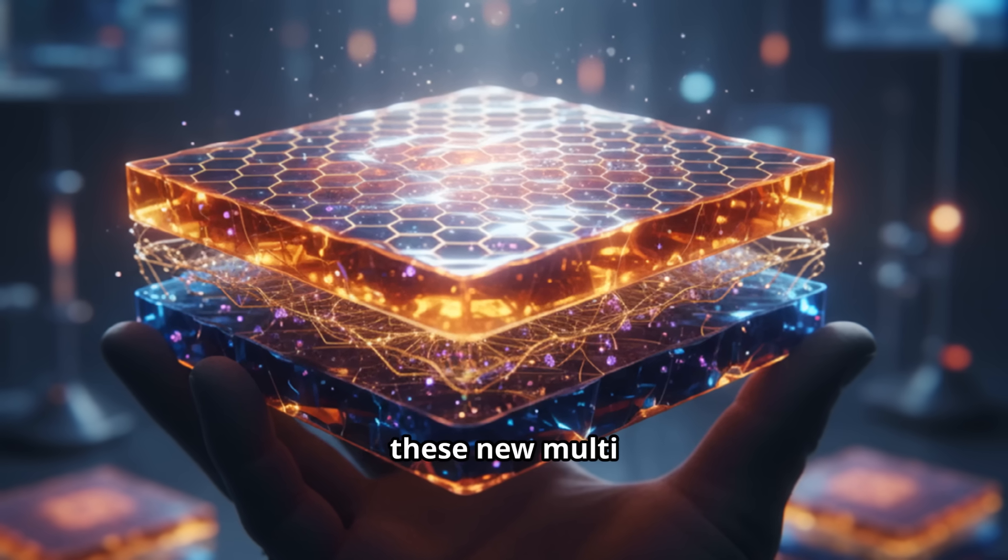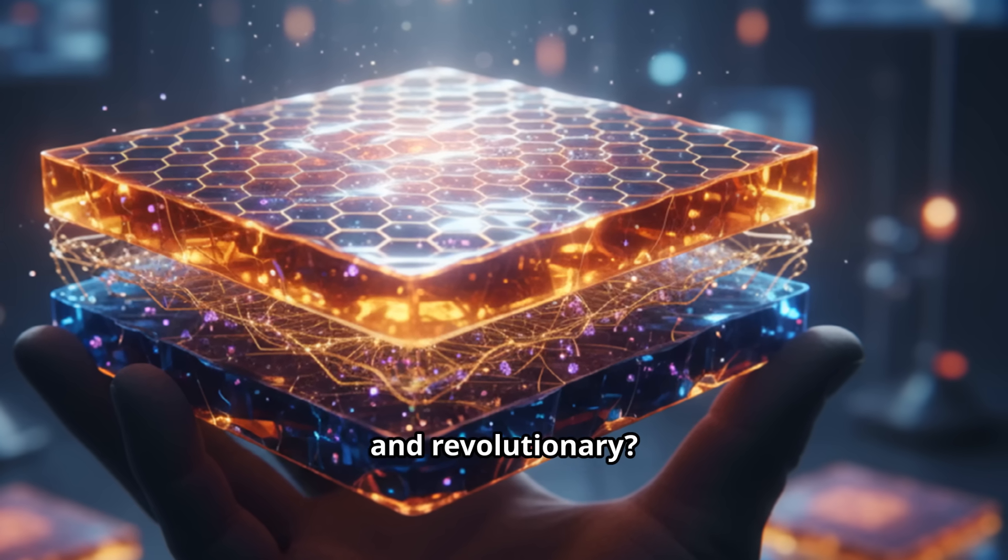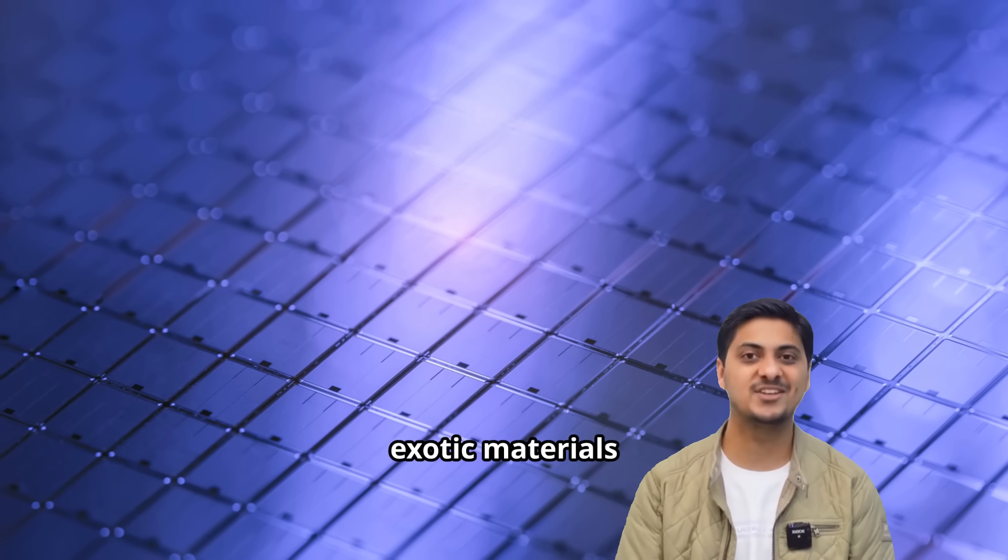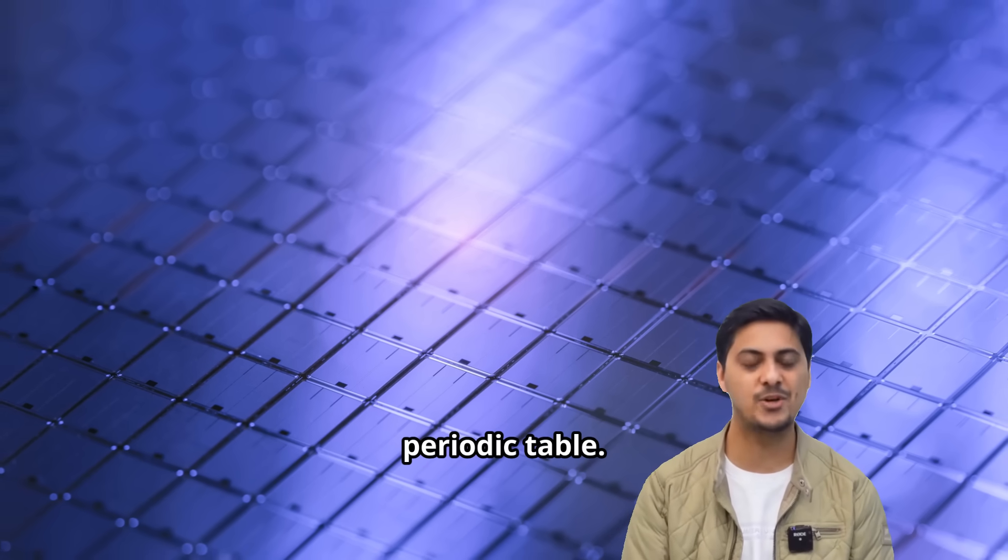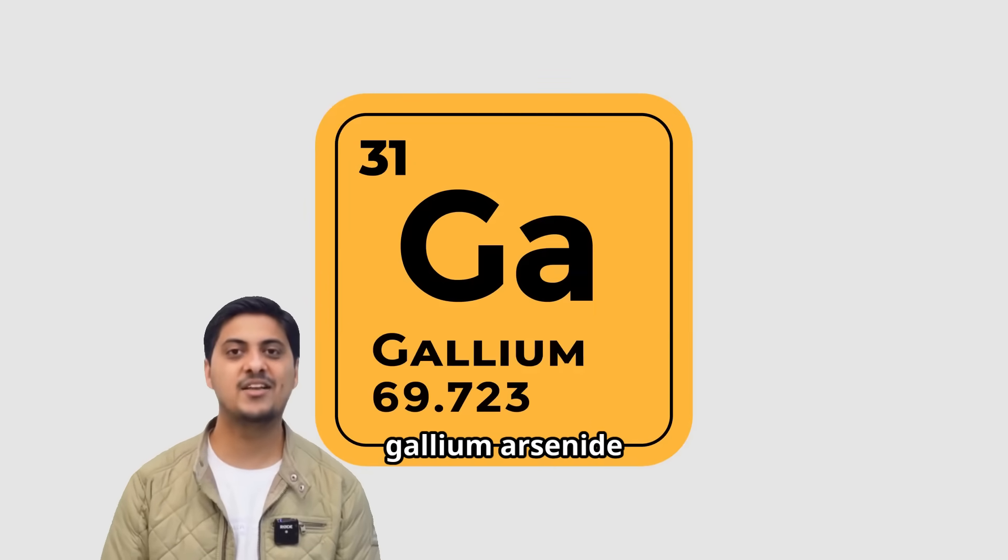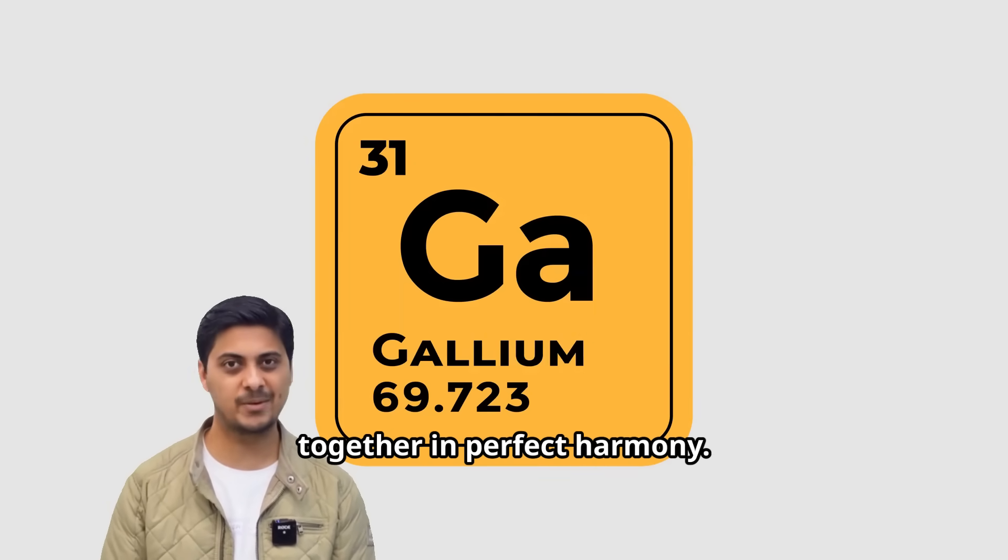So, what exactly makes these new multi-junction concentrated photovoltaic cells so incredibly efficient and revolutionary? These cells use exotic materials called 3-5 semiconductor compounds from the periodic table. Materials like gallium arsenide, indium gallium phosphide, and germanium work together in perfect harmony.